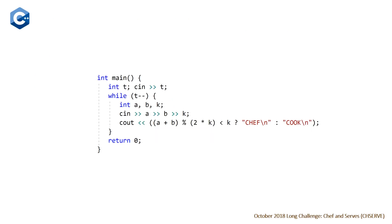Here is our C++ solution — it's pretty short; most of it is just reading in the input. We read in T, then have a while loop for while T is not zero. We read in A, B, and K, and then plug those into our formula: (A + B) modulus (2 * K). If that result is less than K, we output Chef; otherwise we output Cook. That's all there is.